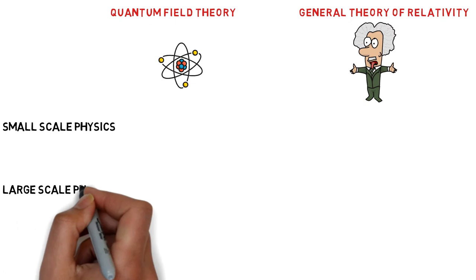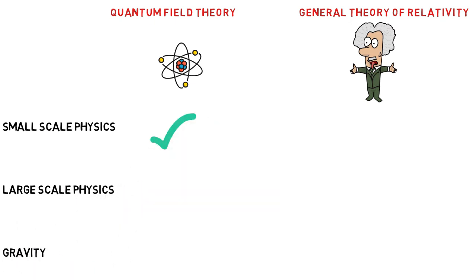Quantum field theory very accurately describes the physics of the small but fails on the astronomical scale and in fact says nothing at all about gravity. In contrast, general relativity accurately predicts gravitational effects on the astronomical scale but says nothing about the physics of the small.